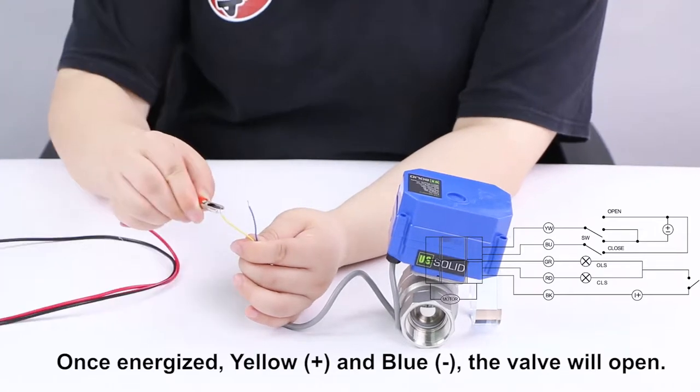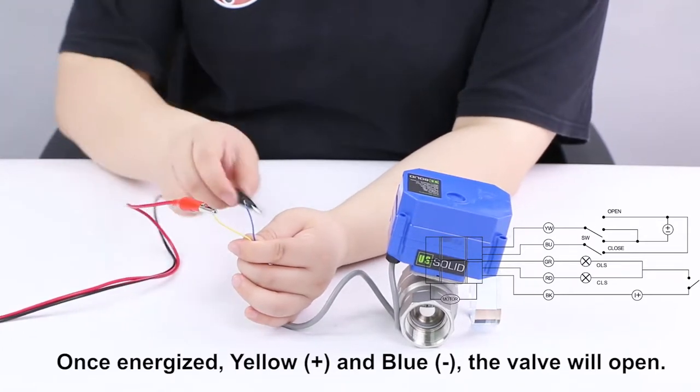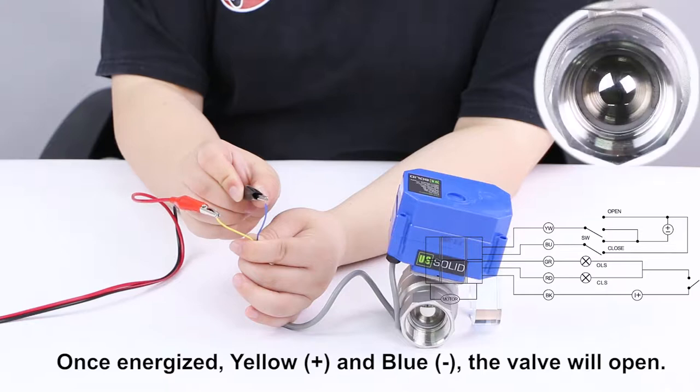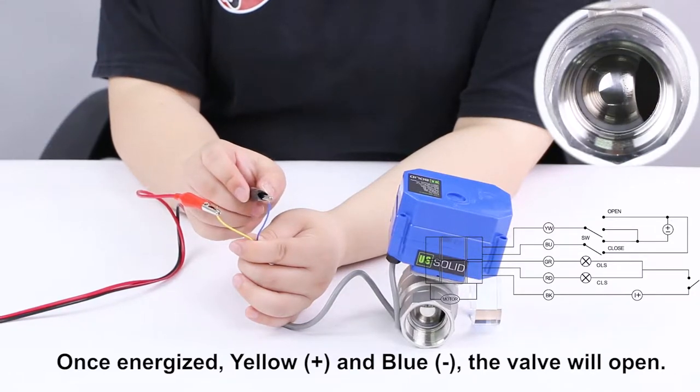If we connect the yellow wire to the positive pole and the blue wire to the negative pole, once energized, the valve will open.